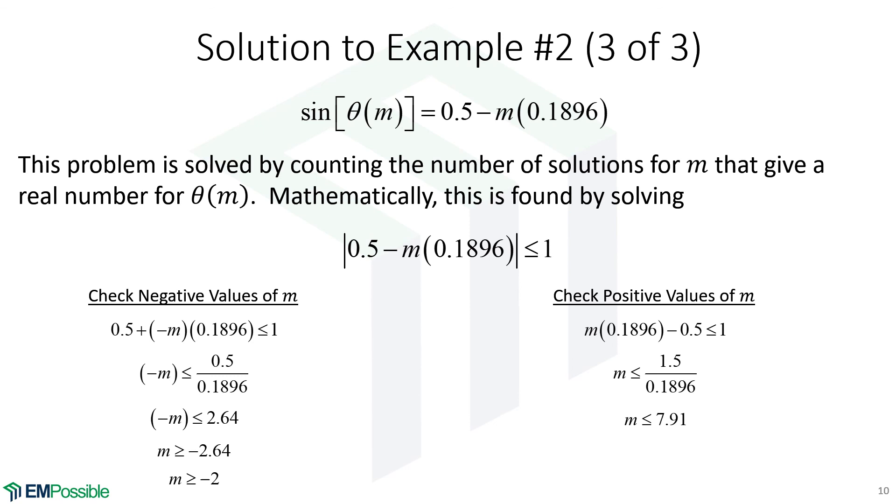And we can do the math. We need m on the positive side to be less than 7.91. Well, we can't have a fractional diffraction order. We need integers. So that means that 8 is not an option. Therefore, the highest positive number that m can assume is 7.